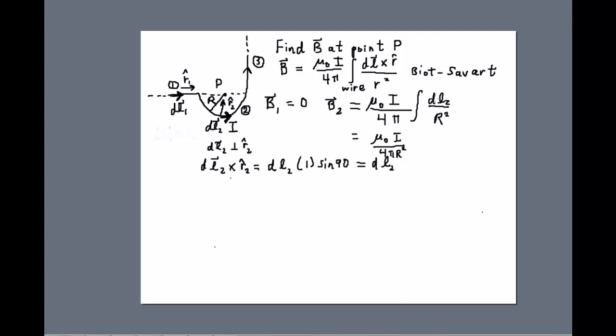And what's left, the integral of dL2 is simply the length of that semicircle, which is half the circumference of the circle. So that would become half of 2pi R. And I've neglected to write in the direction.